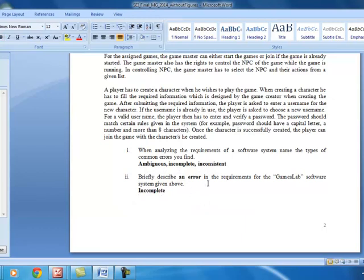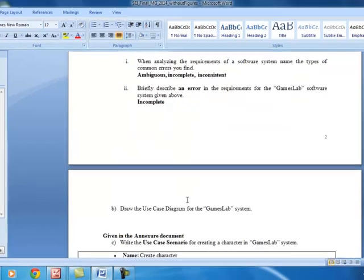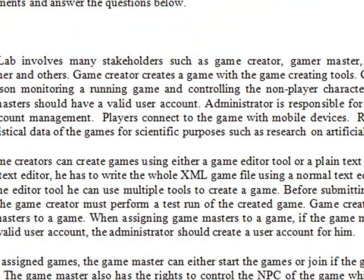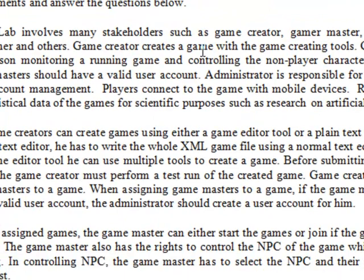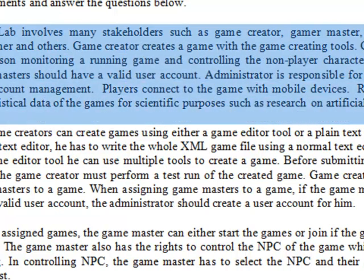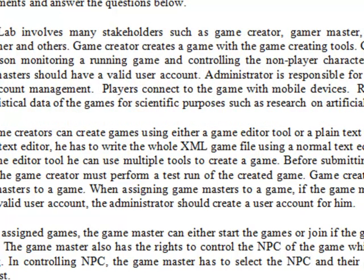Those are a few small questions on the theoretical aspect. The next major part is coming up with the use case diagram for the games lab system. The first paragraph gives you an overall idea about the games lab system. The main important thing is identifying actors who are going to trigger the main functionalities of the system.